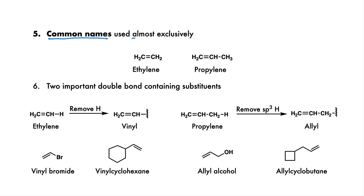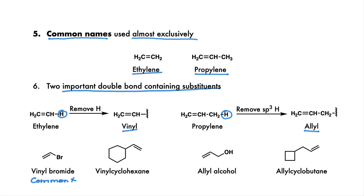There are two important common names of very simple alkenes which are used almost exclusively: ethylene and propylene. You should know two important double bond-containing substituents. If you remove any hydrogen from ethylene, you get the vinyl group. If you remove the sp3 hydrogen of propylene — that is, from the methyl carbon — you get the allyl group. These groups are used in common and systematic nomenclature. The first compound is always called by its common name, vinyl bromide, and the third compound is always called by its common name, allyl alcohol. Vinyl cyclohexane is a systematic name in which the vinyl is a substituent on the parent cyclohexane; likewise, allyl cyclohexane is a systematic name.